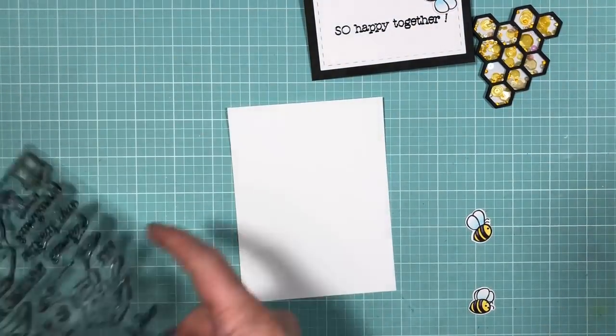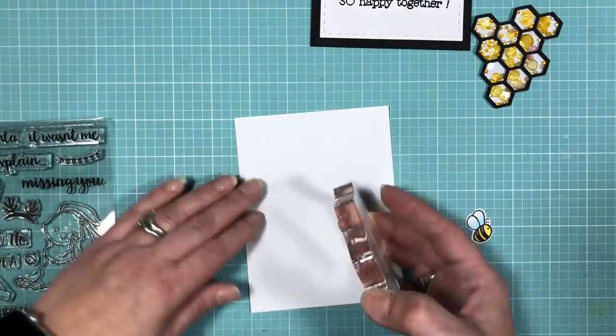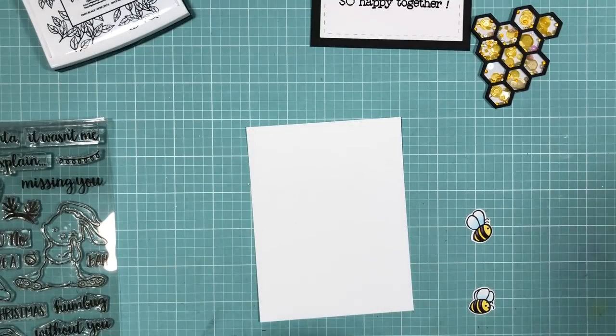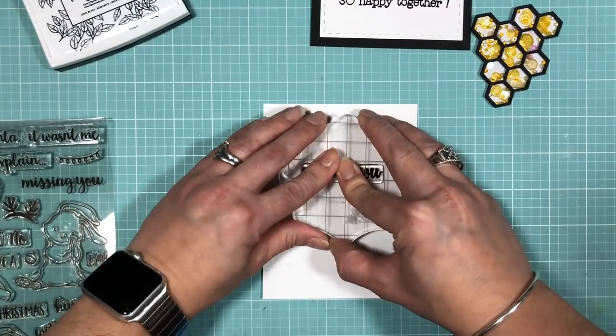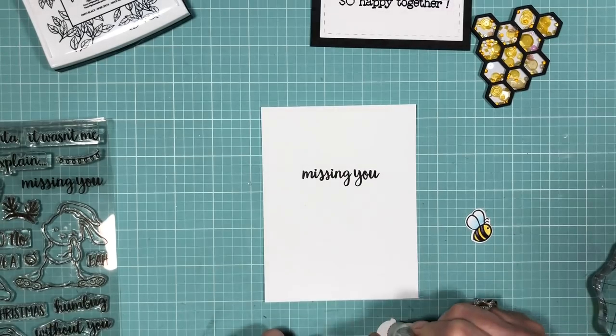To finish off the inside of my card, I'm just using this Missing You stamp from the Blah Humbug stamp set and I think it'll just coordinate well with this happy together friendship card.